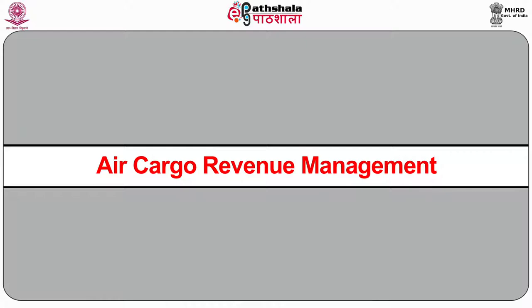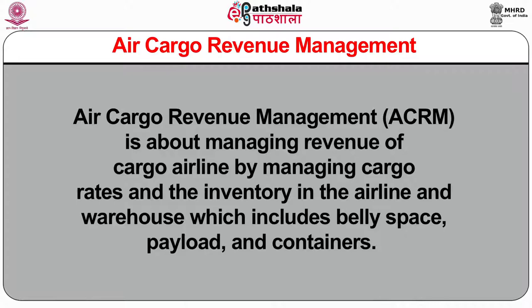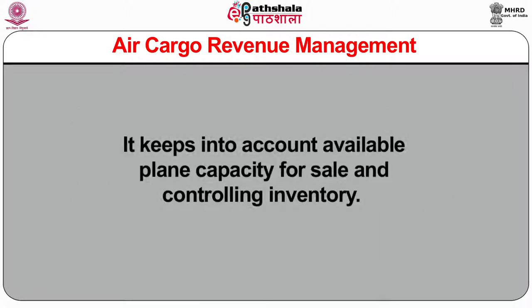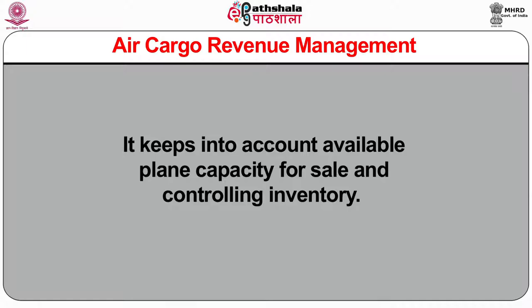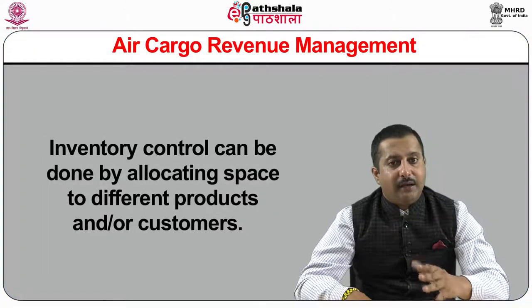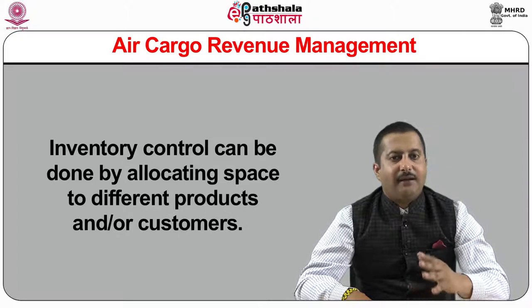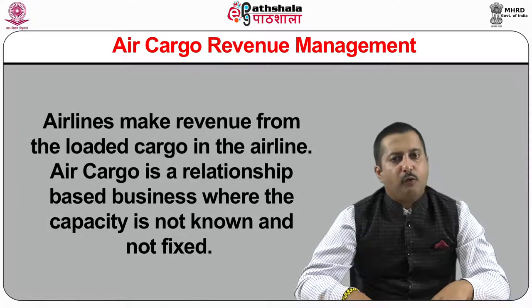Now I will discuss air cargo revenue management. Air cargo revenue management (ACRM) is about managing revenue of a cargo airline by managing cargo rates and the inventory in the airline and warehouse, which includes belly space, payload, and containers. It keeps into account available plane capacity for sale and controlling inventory. Available capacity for sale is based on both physical capacity and understanding the show-up behavior of already booked cargo. Airlines generally overbook actual capacity because part of the booked demand often does not show up at flight departure.